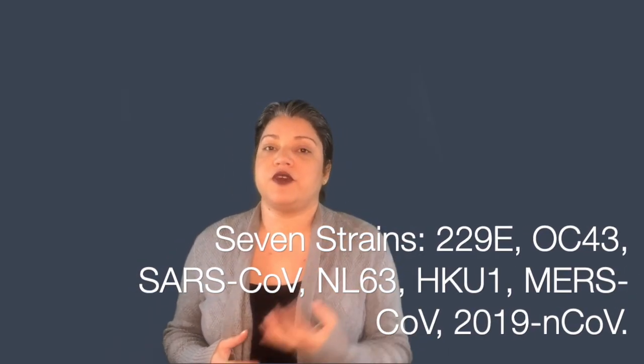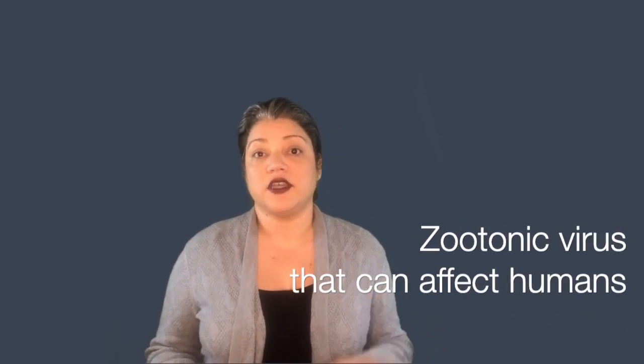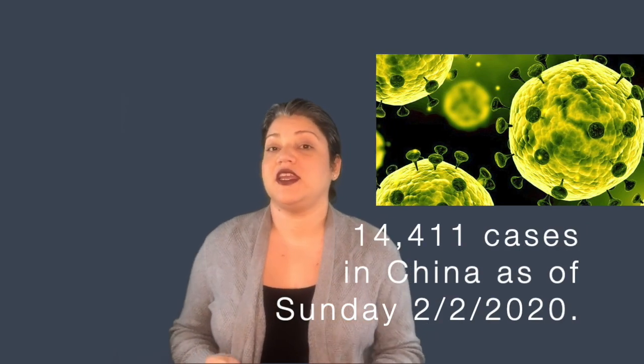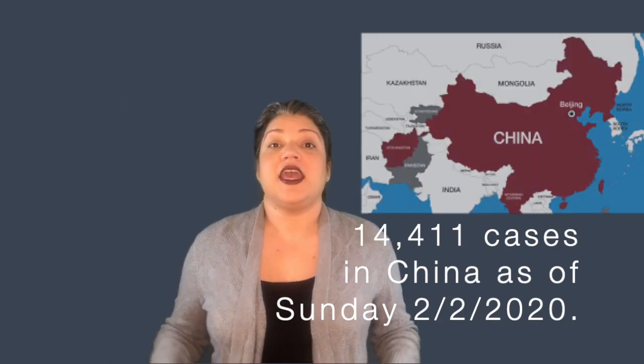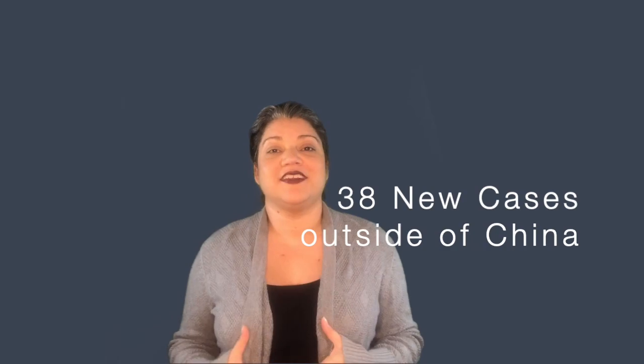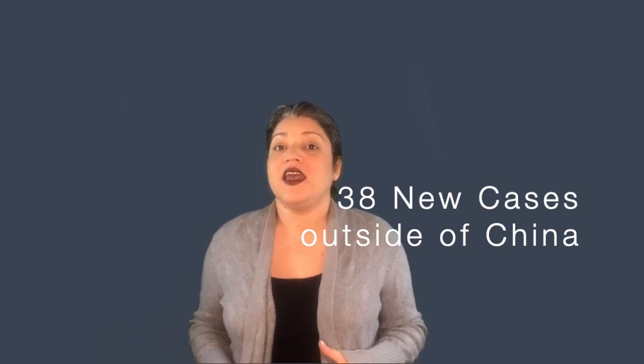There are seven strands of the coronavirus known to infect humans, but they could also be zoonotic. They temporarily named this one 2019 NCOV. At the present moment, there are over 14,411 confirmed cases in China as of today, and about 38 to 40 cases outside of China. This is starting to become a little bit scary.